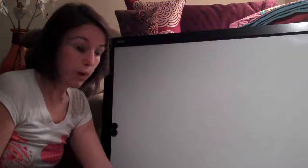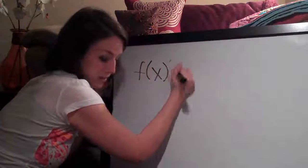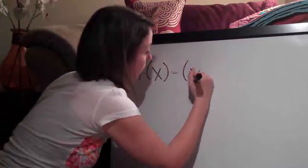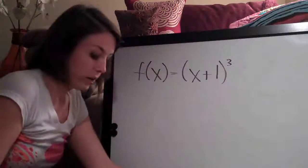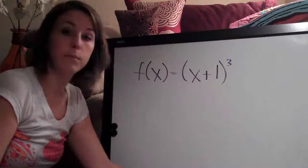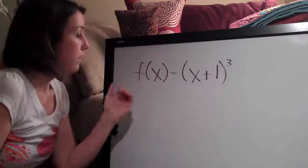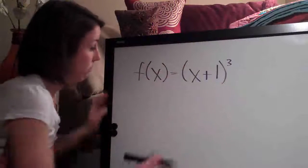We're just going to learn about it with some really basic problems here by taking some derivatives. So the first problem we're going to do, f of x equals x plus 1 cubed, and we're going to take the derivative of this problem to illustrate the concept of chain rule. We're going to kind of ignore the derivative section and just look at chain rule.